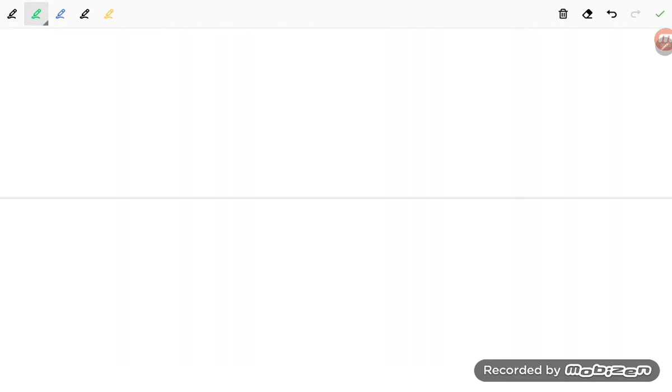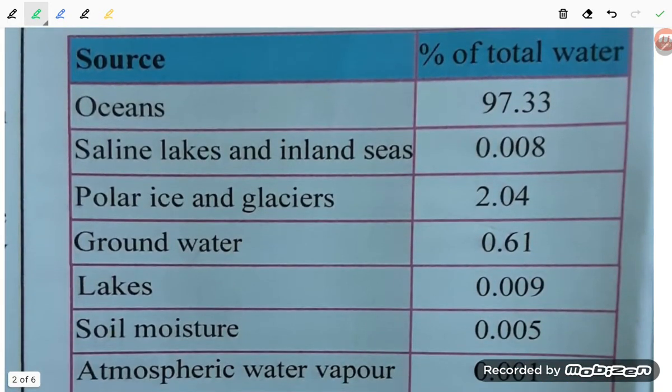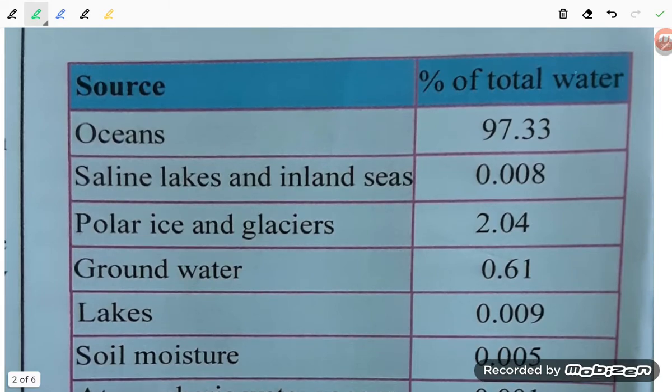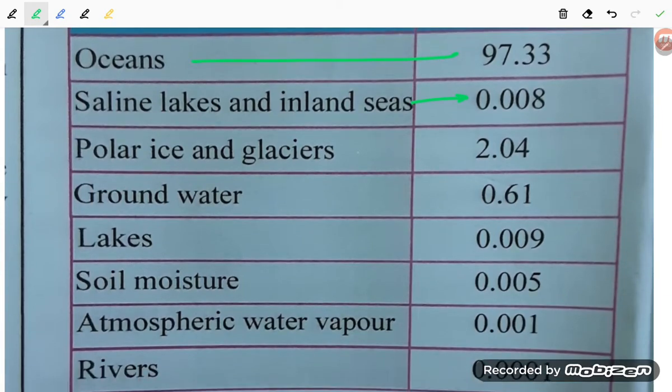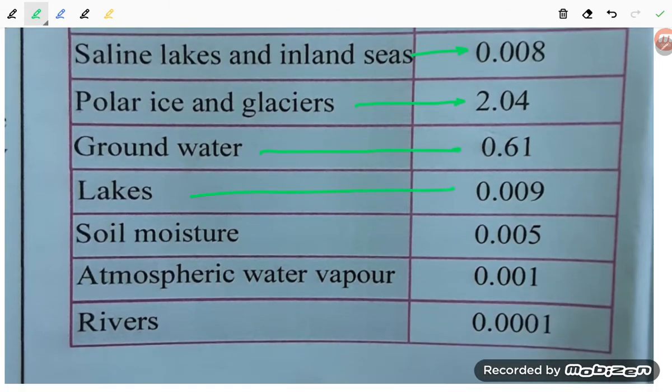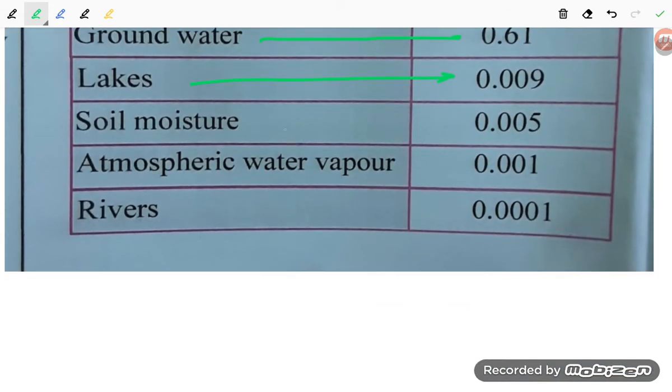If you talk about the sources of water, the ocean comprises 97.33 percent, saline lakes water is 0.008 percent, polar ice and glaciers 2.04 percent, groundwater 0.61 percent, lakes 0.009 percent.